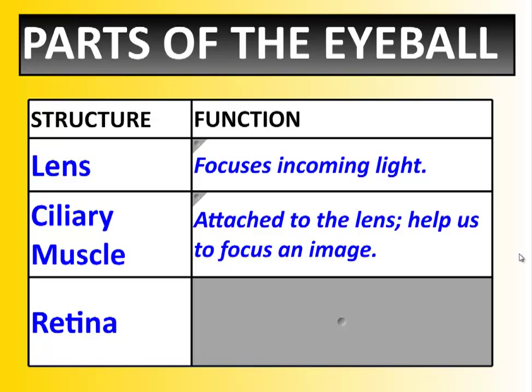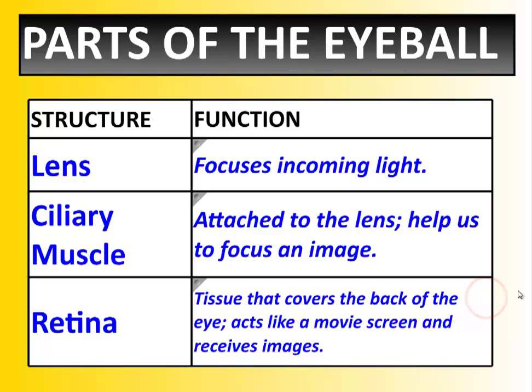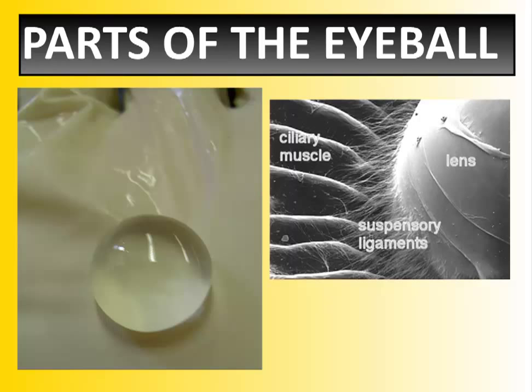Old age also does something to those muscles too. Now we have the retina, which we talked about last screencast. It is the tissue that covers the back of the eye, and this tissue acts like a movie screen — it receives images that pass through the pupil and through the lens onto the retina. On the left here, there's a picture of a lens — you can see it's very transparent. And just on the right, you can see all those individual ciliary muscles as they attach to the lens and stretch and relax it as needed.